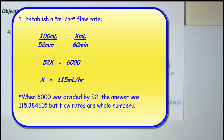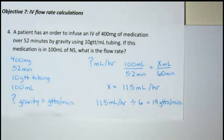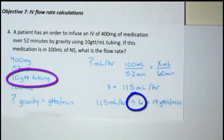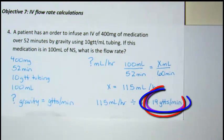Just a note, if I'm using ratio and proportion to solve my milliliter per hour rate, I have to note that 52 minutes must be the hour equivalent of 60 minutes. Once I have 115 milliliters per hour, I can then divide that by 6, which is my magic number based on 10 drop tubing for an answer of 19 drops per minute.